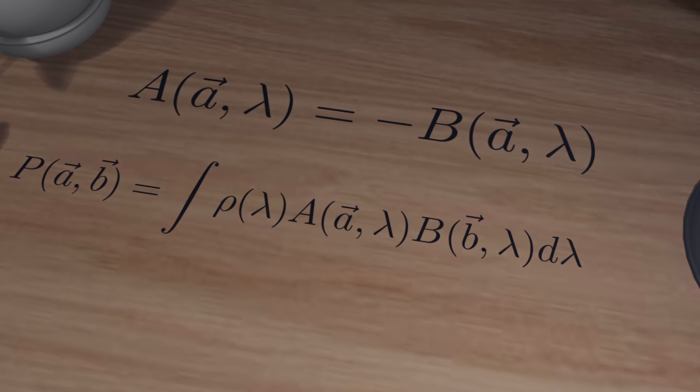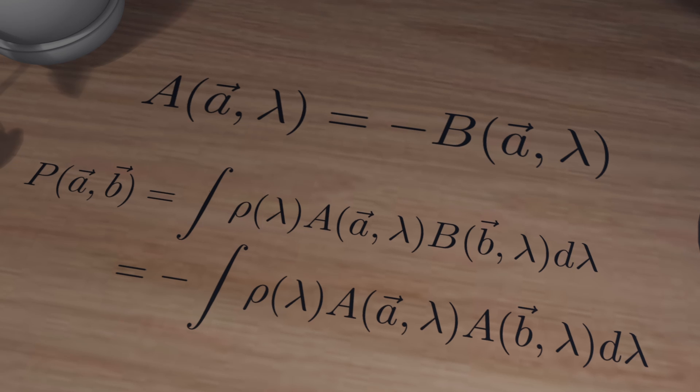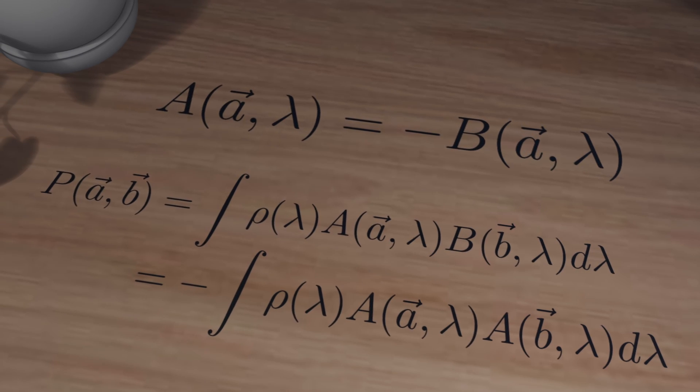Given that A equals minus B, we can rewrite the integral with a minus sign and substitute B for A.